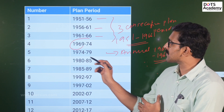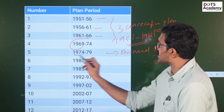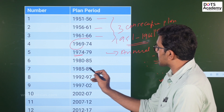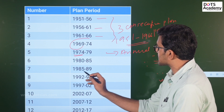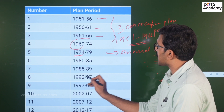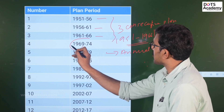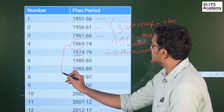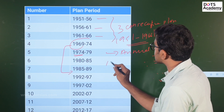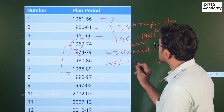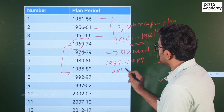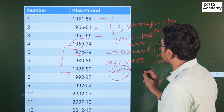We will start from 1974 and continue to 1979, then 1980, 1985, 1985 to 1989. Then the fourth and seventh five-year plans followed from 1969 to 1989.